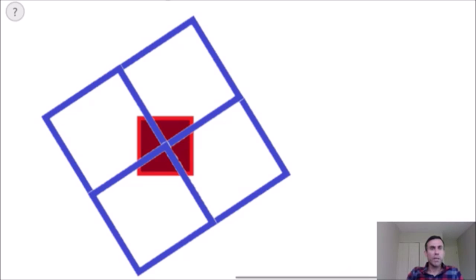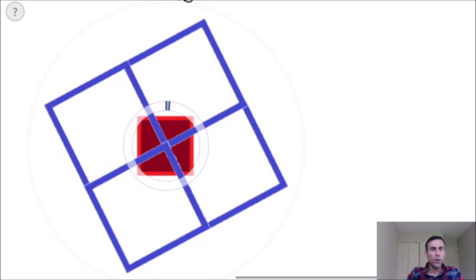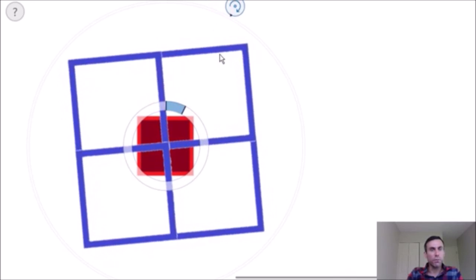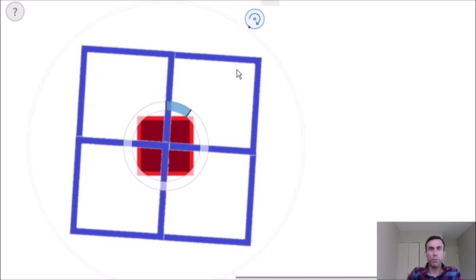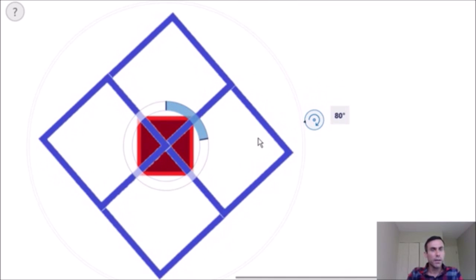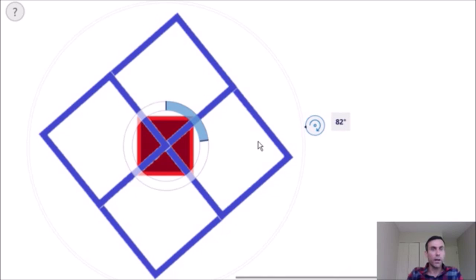I'm going to rotate these blue squares around the center of the red square and you're going to see how all of the shaded areas are exactly the same. Notice if we rotate it a little bit to the right, how we can create four identical, four smaller squares. Notice how if we rotate it a little more to the right, we create two diagonals that also make four identical triangles.